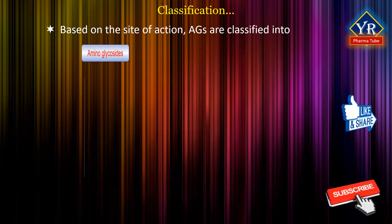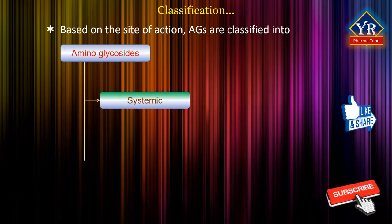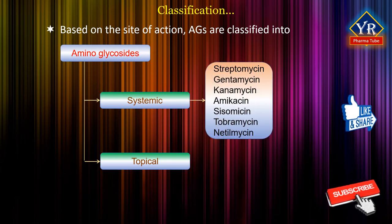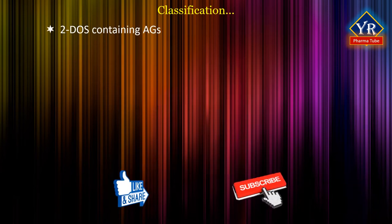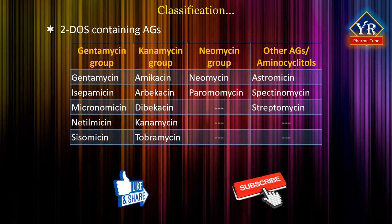Based on the site of action, aminoglycosides are classified into systemic aminoglycosides and topical aminoglycosides. Systemic aminoglycosides are streptomycin, gentamicin, kanamycin, amikacin, sisomycin, tobramycin and netilmycin. Topical aminoglycosides include neomycin and framycetin. The table illustrated here shows the two deoxystreptamine-containing aminoglycosides divided into the gentamicin group, kanamycin group, neomycin group, and other aminoglycosides or aminocyclitols. The structures of clinically used aminoglycosides have been given at the appropriate places in this lesson and also in the previous lesson.